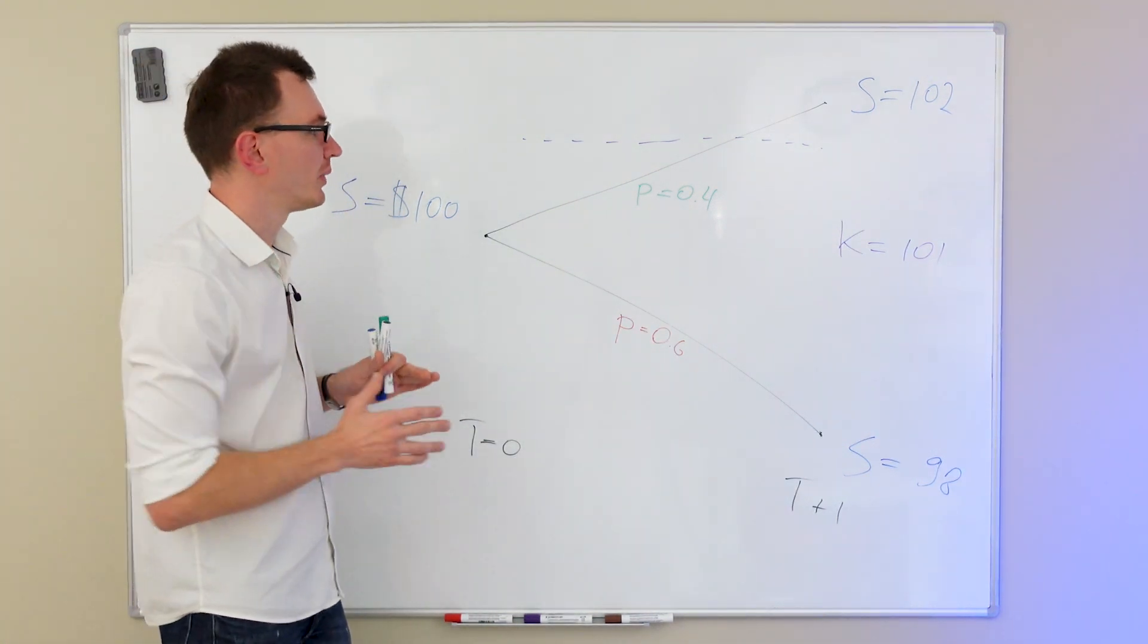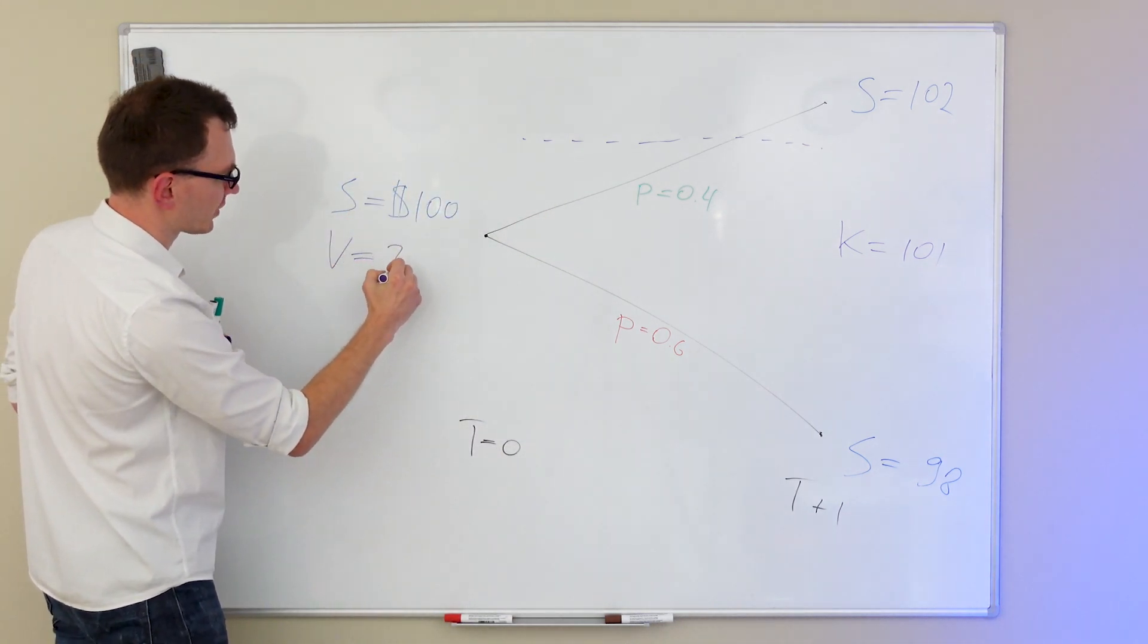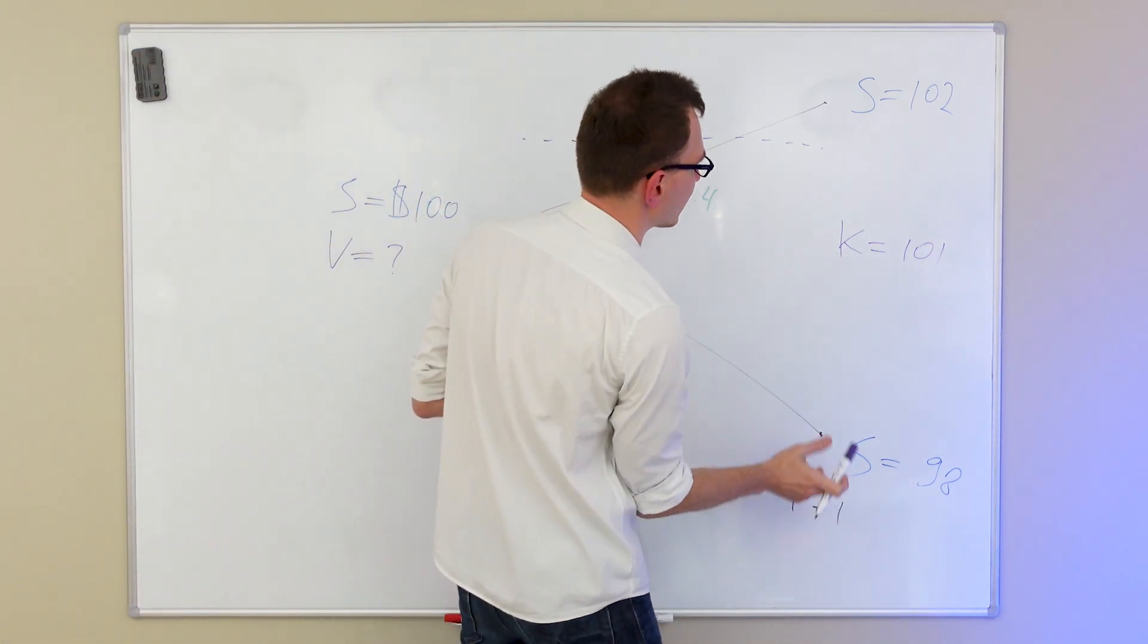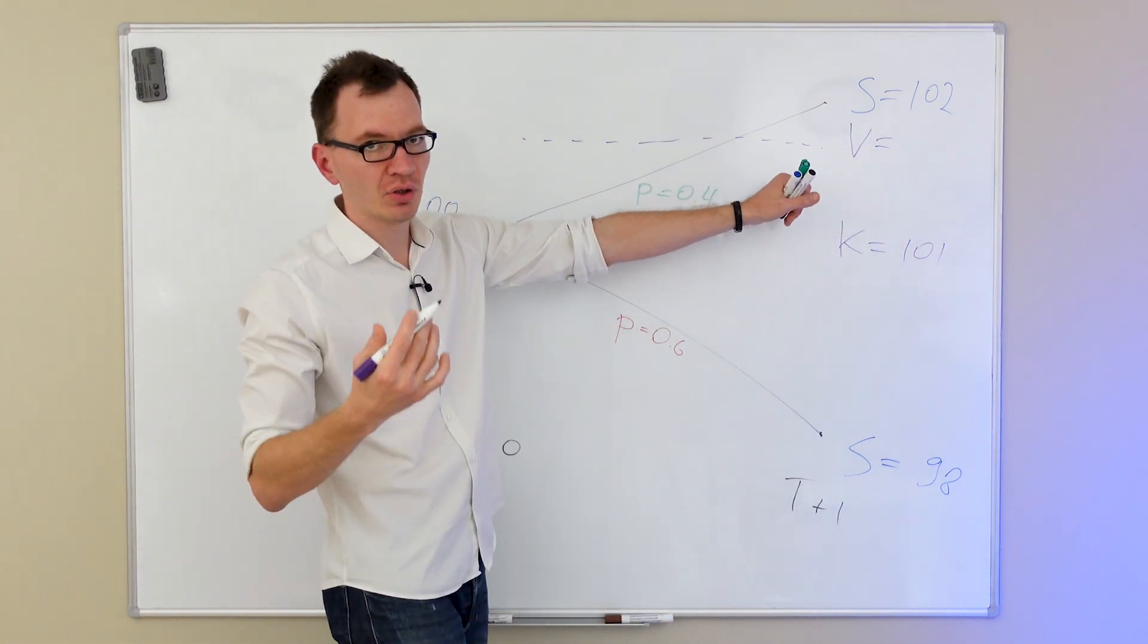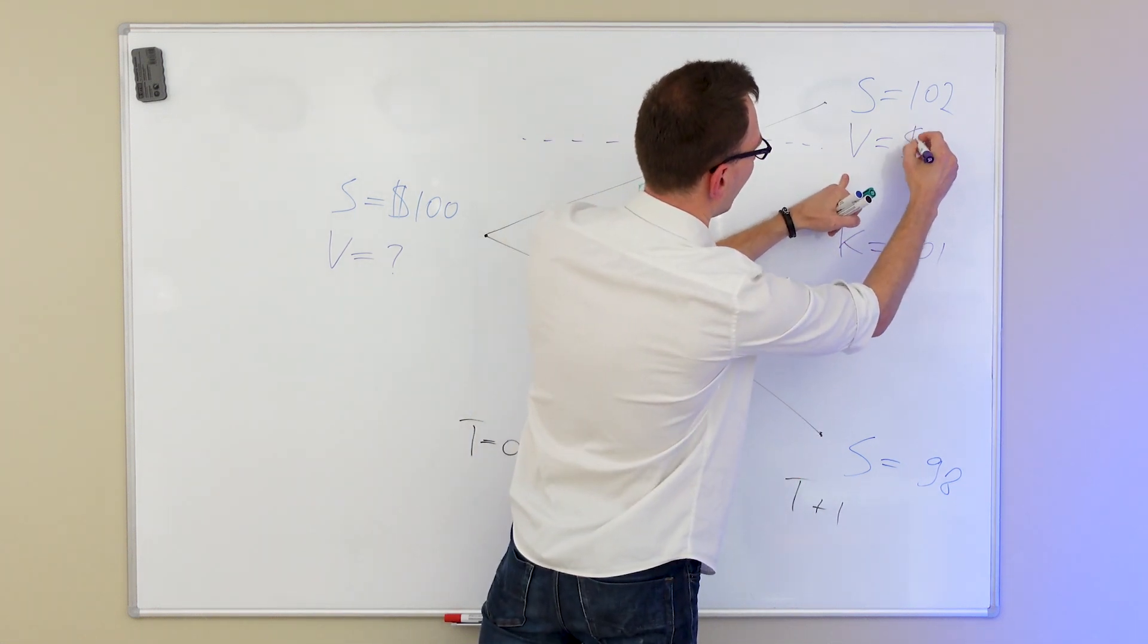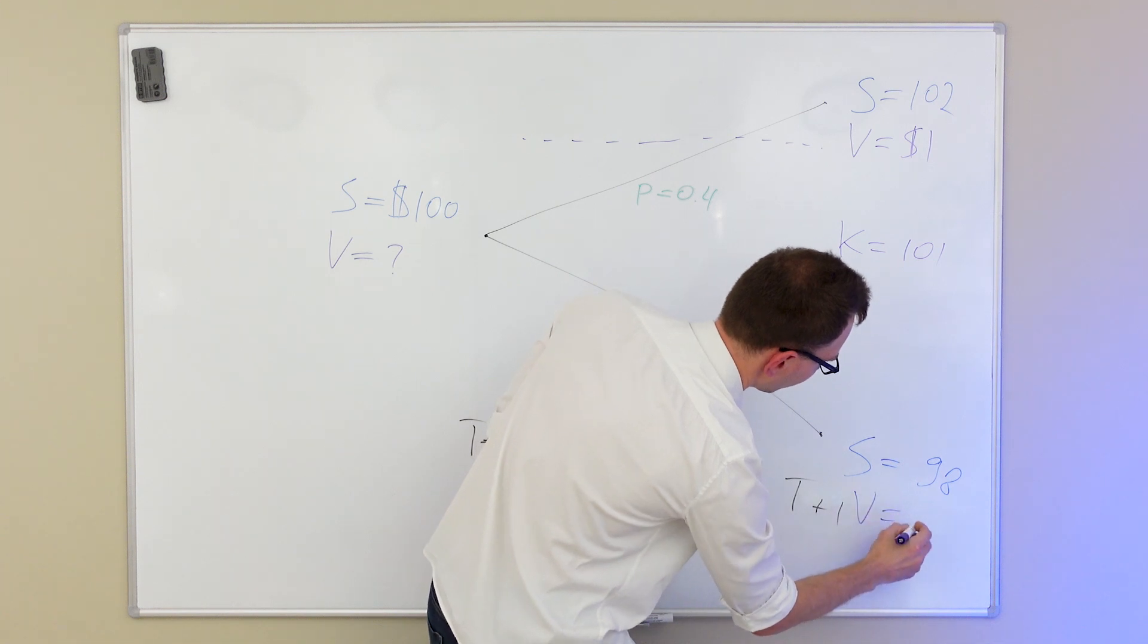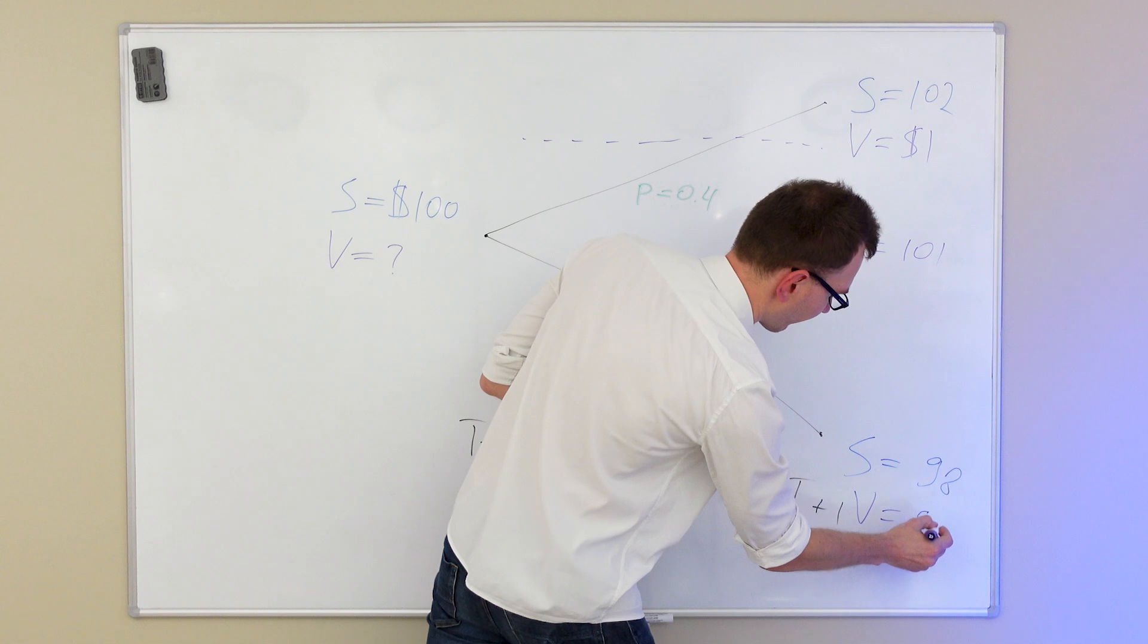So, right now, let's see what we can do with these probabilities. We don't know the option's value currently, so that's something we need to figure out. But, at expiry, at t plus 1, we do know the option's value in these two states. If the stock goes up, the strike price is 101, the option will be worth 1 dollar. If the stock price goes down, the stock price is 98, the option is worthless, so it expires with a value of 0.